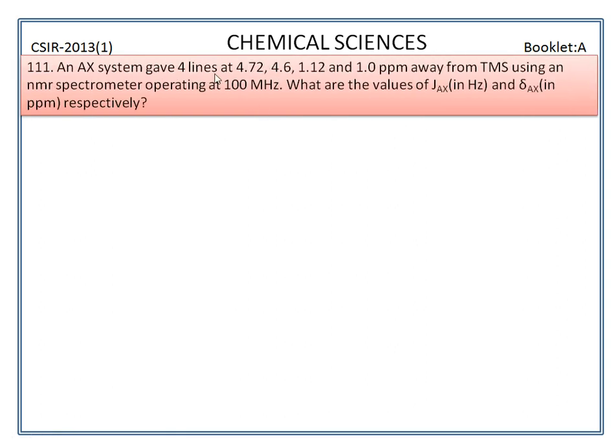An AX system gave 4 lines at 4.72, 4.6, 1.12 and 1.0 ppm away from TMS using an NMR spectrometer operating at 100 MHz. What are the values of JAX and delta AX respectively? The options of the values are shown here.